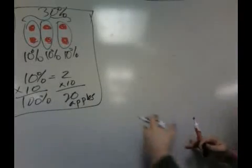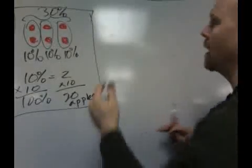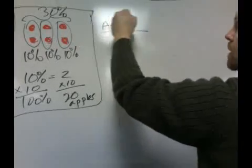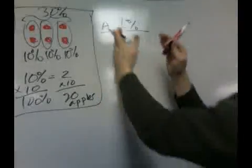Another way to do it is we can make a table, and we could say, all right, let's do apples and percents. If we wanted to, we could switch it, and we could have put the percents on the left,